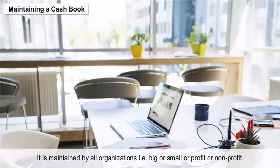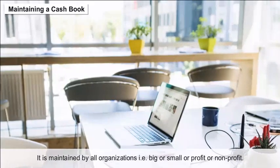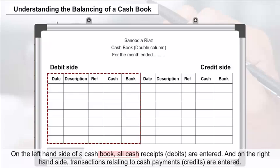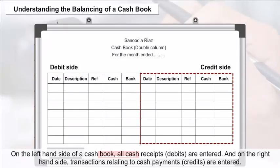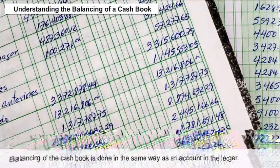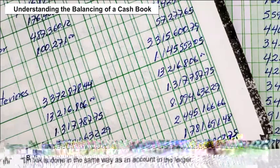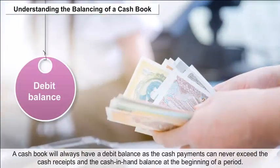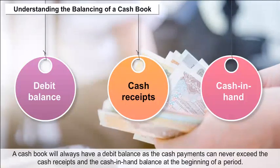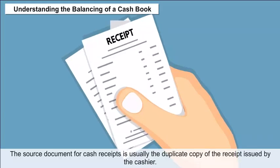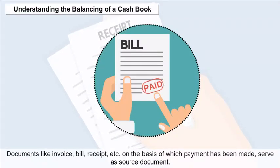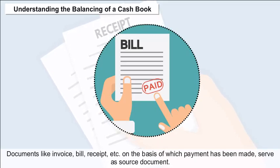Balancing the Cash Book: On the left-hand side of a cash book, all cash receipts (debits) are entered, and on the right-hand side, transactions relating to cash payments (credits) are entered. Balancing of the cash book is done in the same way as an account in the ledger. A cash book will always have a debit balance as cash payment can never exceed cash receipts and the cash in hand balance at the beginning of the period. The source document for cash receipts is usually the duplicate copy of the receipt issued by the cashier; documents like invoice, bill, and receipt serve as source documents for payments.